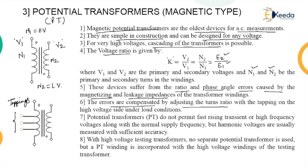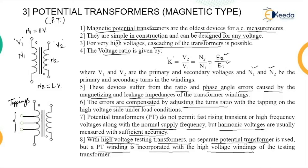Potential transformers do not permit fast-rising transients or high-frequency voltages along with the normal supply frequency. However, harmonic voltages are generally measured with sufficient accuracy. With high voltage testing transformers, no separate potential transformers are used; instead, the potential transformer winding is incorporated with the high voltage windings of the testing transformer.